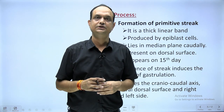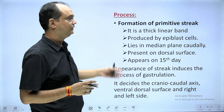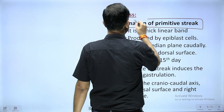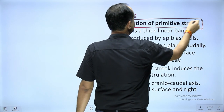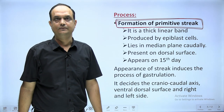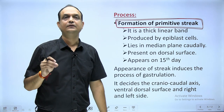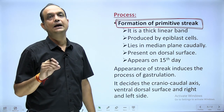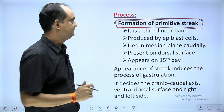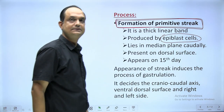When you talk about the process of gastrulation, the first step is formation of primitive streak. Primitive streak is a thick linear band which is formed by epiblast cells. So the question 'primitive streak formed by which cells' — answer is epiblast cells.